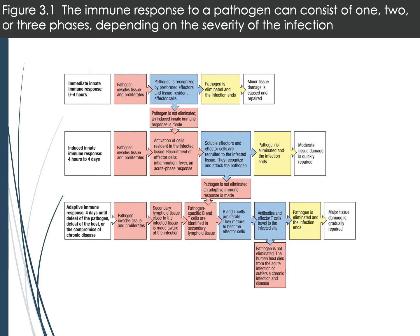Any kind of tissue damage would be repaired. If the initial responses do not control the pathogen and it's not eliminated, we move into the induced innate immune response, which occurs between four hours to four days. This involves activation of resident cells and recruitment of additional ones — this is where we see inflammation. Inflammation recruits other cells to help residents wherever the infection is. Symptoms like fever may appear, as increased body temperature moves outside the normal temperature range for some of the pathogen's enzymes.